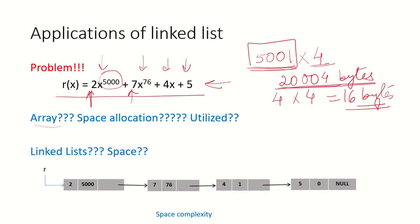Out of the 200,004 bytes only 16 bytes are being used to store the coefficients. So can we use a linked list for this? In a linked list we have two parts: the data part and a pointer to the next node. In the data part we are going to store both the coefficient and the exponent of x. For example, taking polynomial R(x), the first term has coefficient 2 and exponent 5000.